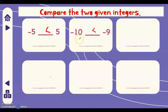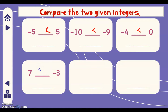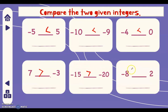Negative ten is farther from zero than negative nine, so negative nine is greater. Next, zero and negative four: zero is greater than negative four. Seven and negative three: seven is greater than negative three. Negative 15 is bigger than negative 20, and two is greater than negative eight.